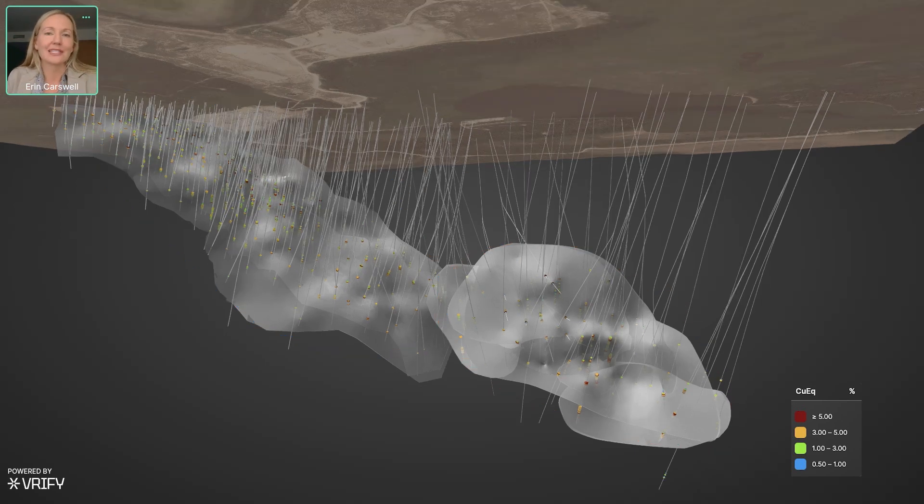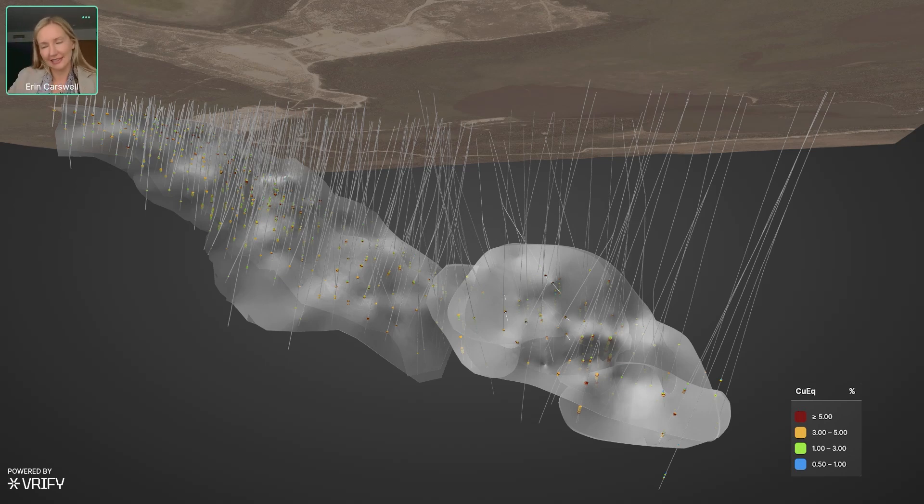As you can see, the holes towards the northwestern end of Tesla are getting fairly deep. We don't intend to chase Tesla much further down plunge. That can be something that can be done from underground later. But what we do want to do is get a good enough handle in terms of a resource on Tesla, that we can build that into future studies and planning. So that's the aim of working towards the future resource for this mineralized zone.